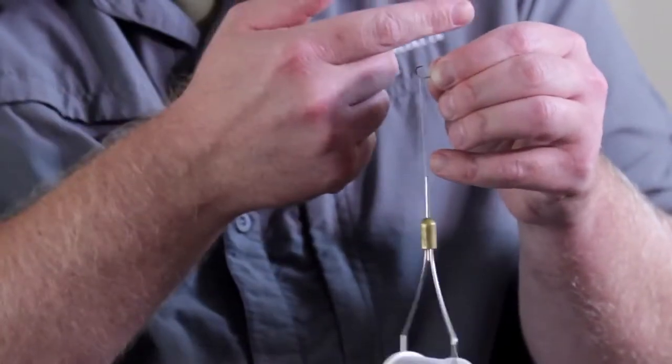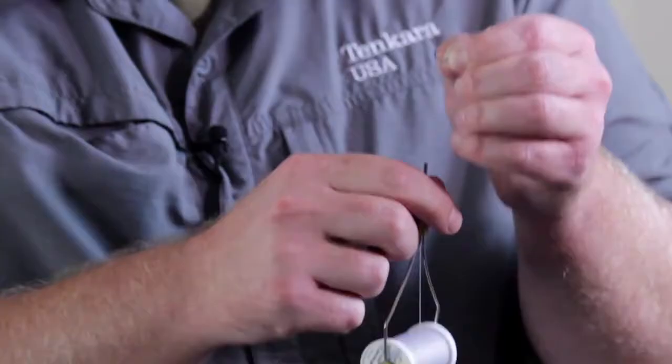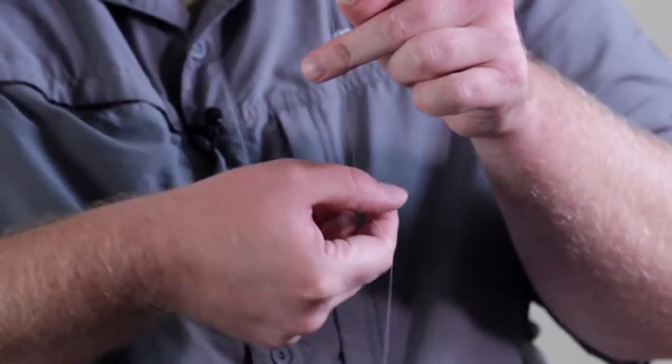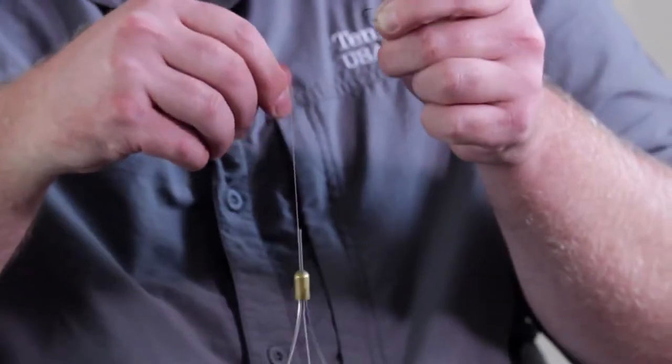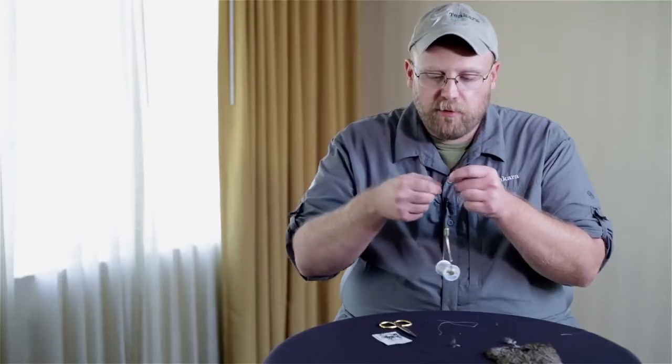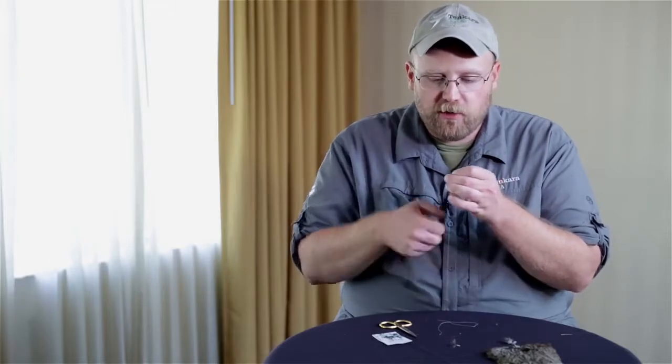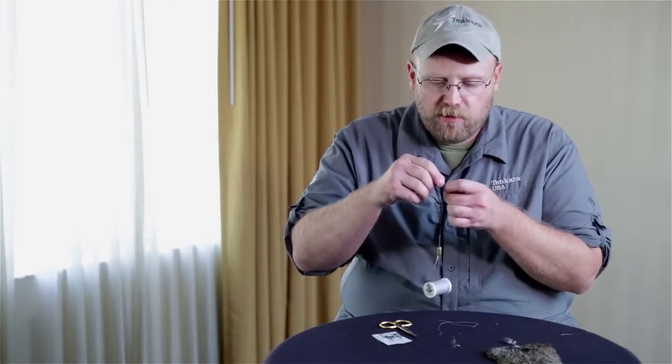I'm going to pull my bobbin down so I have plenty of room. Catch the thread with my middle finger on my left hand, pinch it with my right hand and bring a loop up over. And again, I want that loop over thread. I don't want it over bare hook shank or it's going to come loose right away.